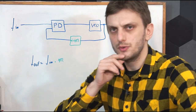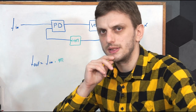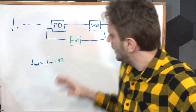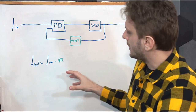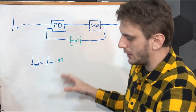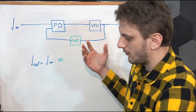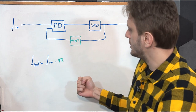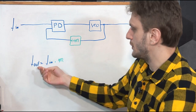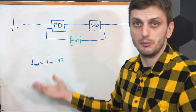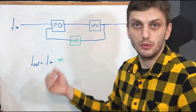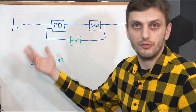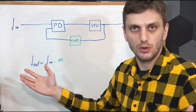Now there's one more thing to consider. With this circuit we can get integer frequency multiples — so if we start with 1 MHz, we can go to 2, 3, 4, 5 MHz and so on.